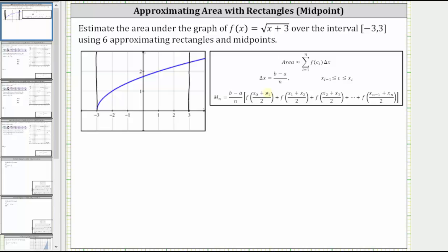Delta x is equal to the quantity b minus a divided by n. In our case, a is equal to negative three, b is equal to positive three, and because we are using six approximating rectangles, n is equal to six. This gives us delta x equal to three minus negative three divided by six, which is equal to six divided by six, which is equal to one.